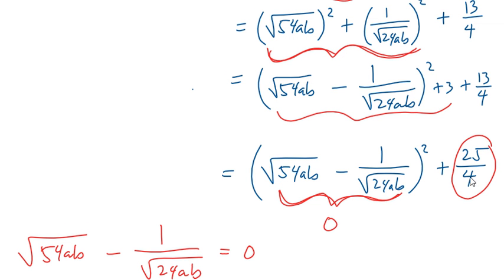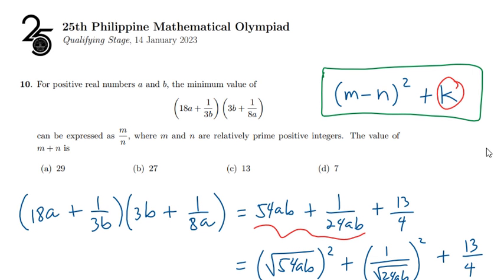Since 25/4 is already in lowest terms, we can say that m = 25 and n = 4. And so m + n = 29. Thus the answer is letter A.